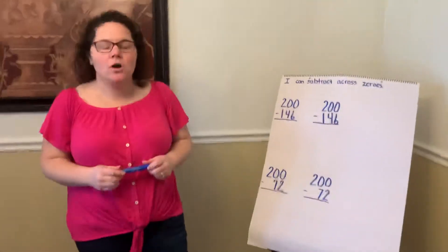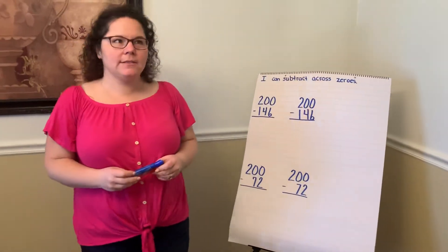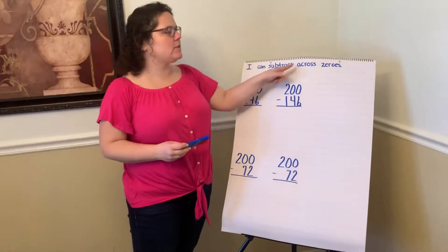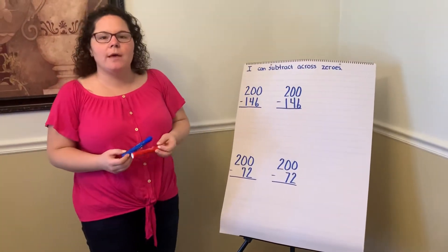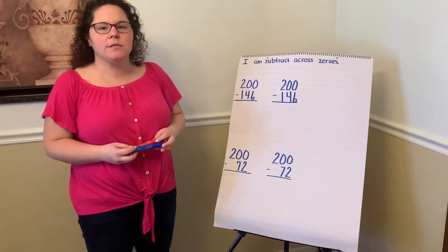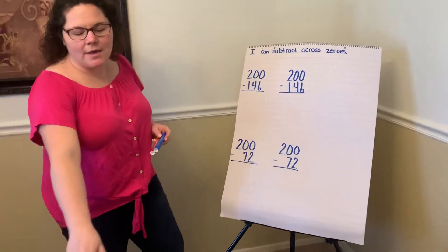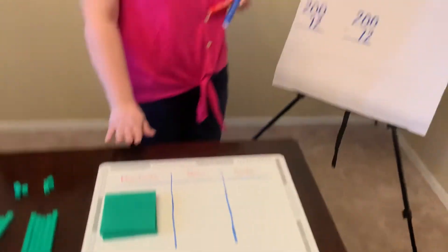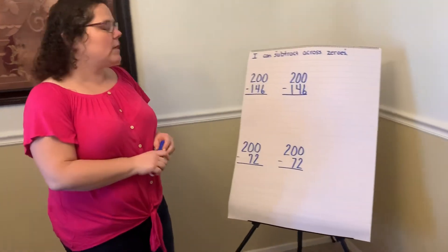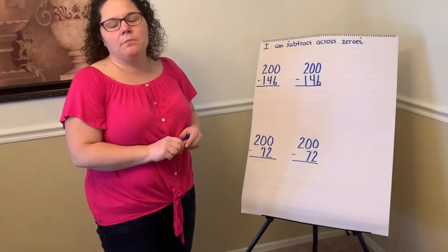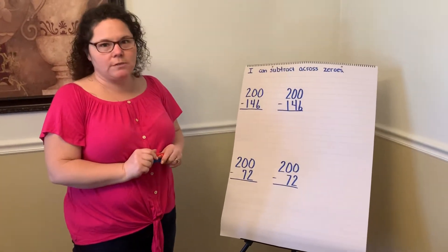Hi boys and girls, this is Mrs. Harley. Today we're going to continue to work on the I can statement of I can subtract across zeros. The other time when we met, we talked about subtracting across zeros using the expanded form method and our manipulatives. We're going to continue with our manipulatives today and our expanded form method, but I'm also going to show you the ungroup first method.